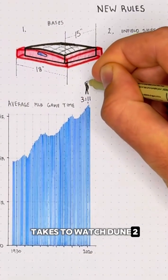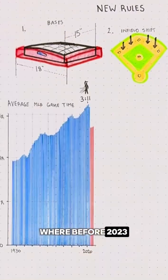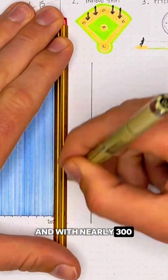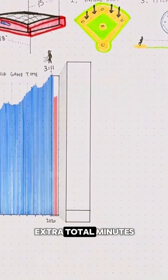That's longer than it takes to watch Dune 2, and a big chunk of that time comes between pitches, where before 2023, pitchers could take as long as they wanted, and with nearly 300 pitches per game, even an extra 1 second per pitch adds up to 5 extra total minutes.